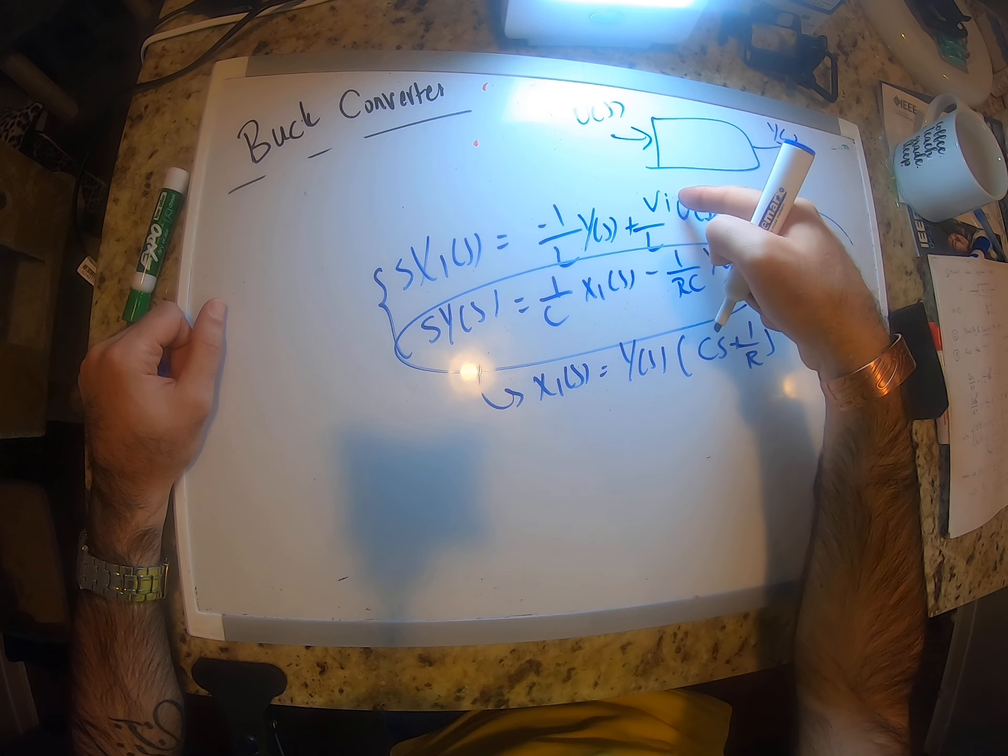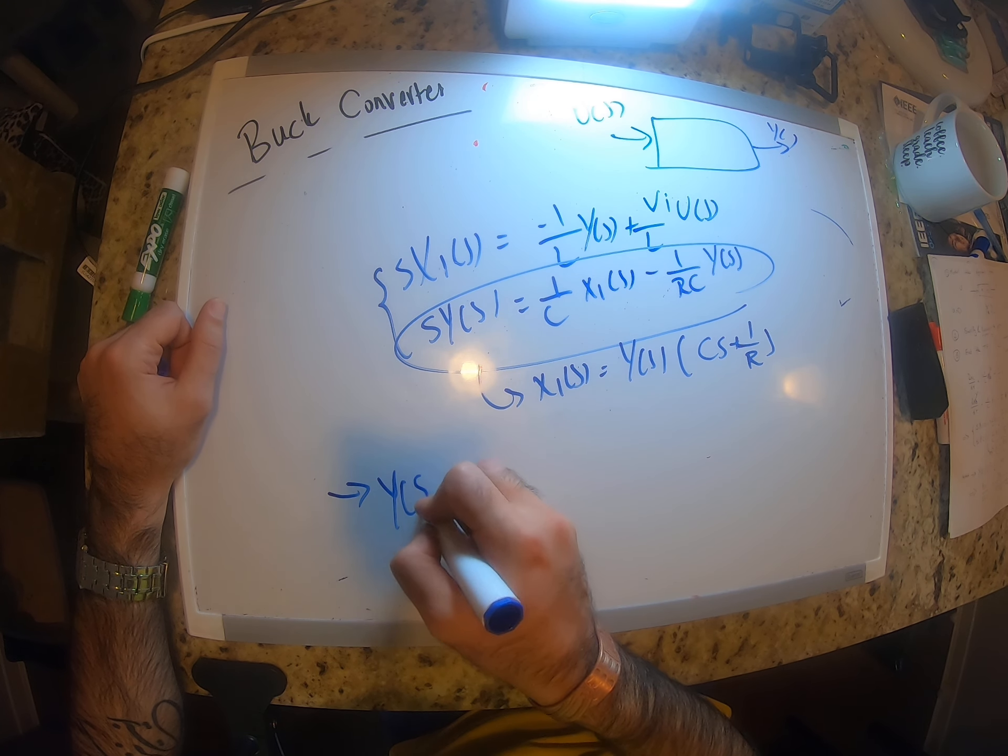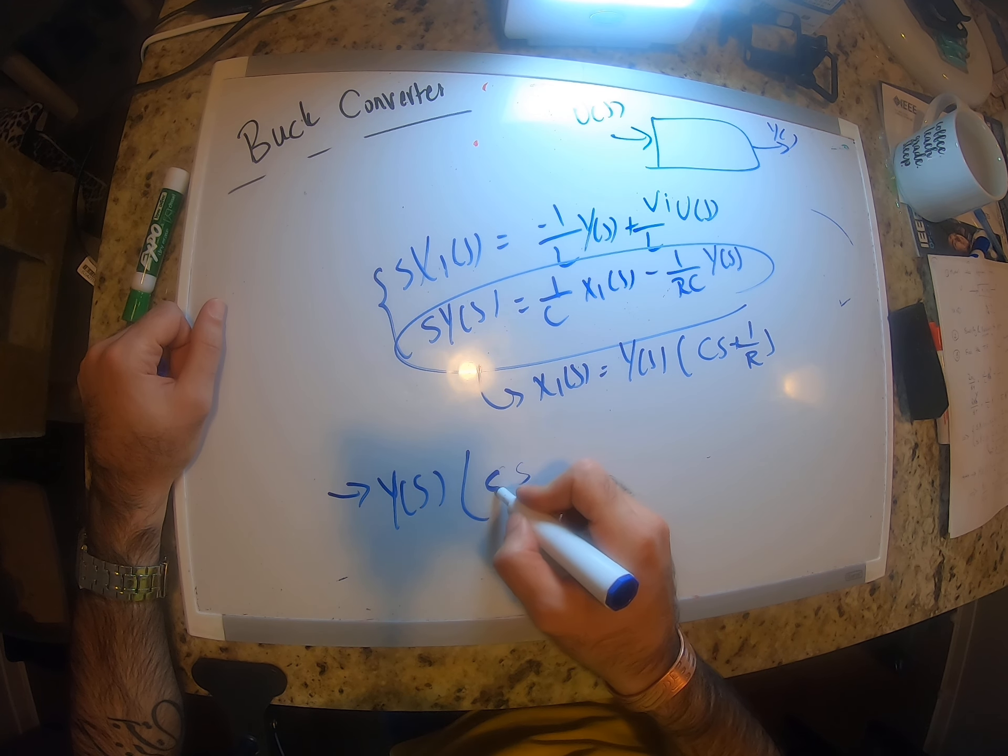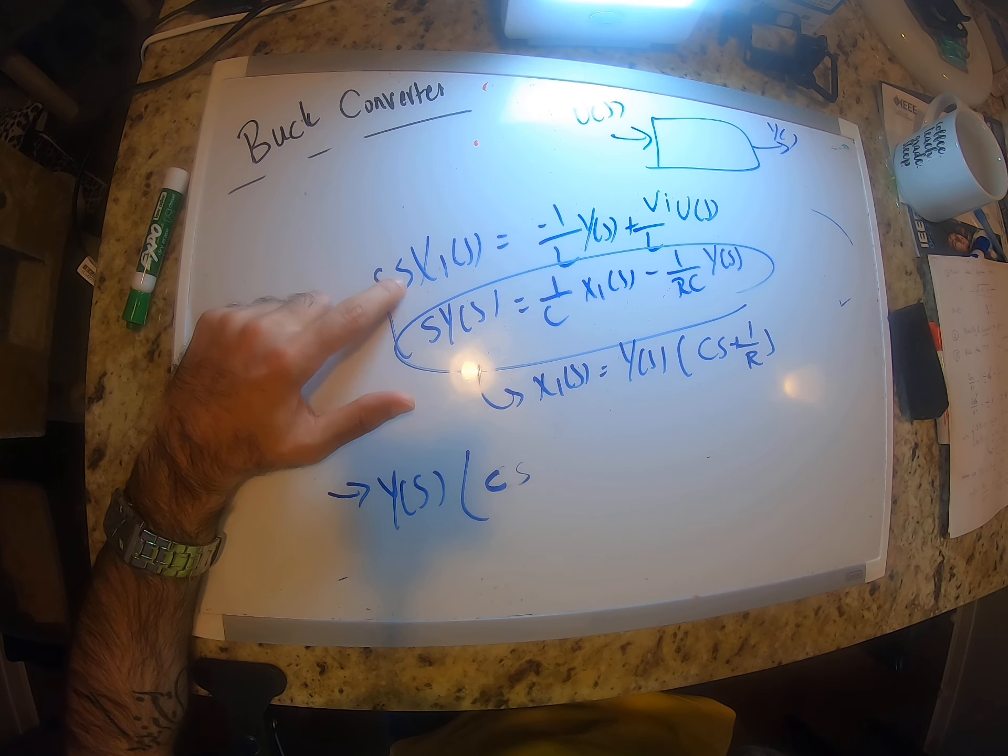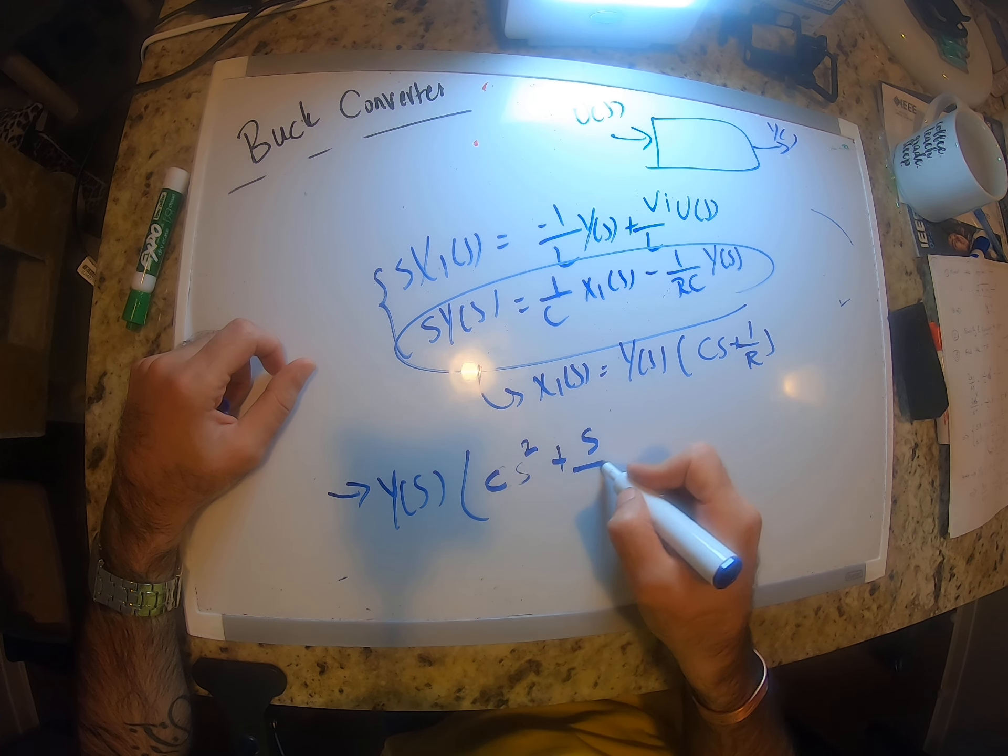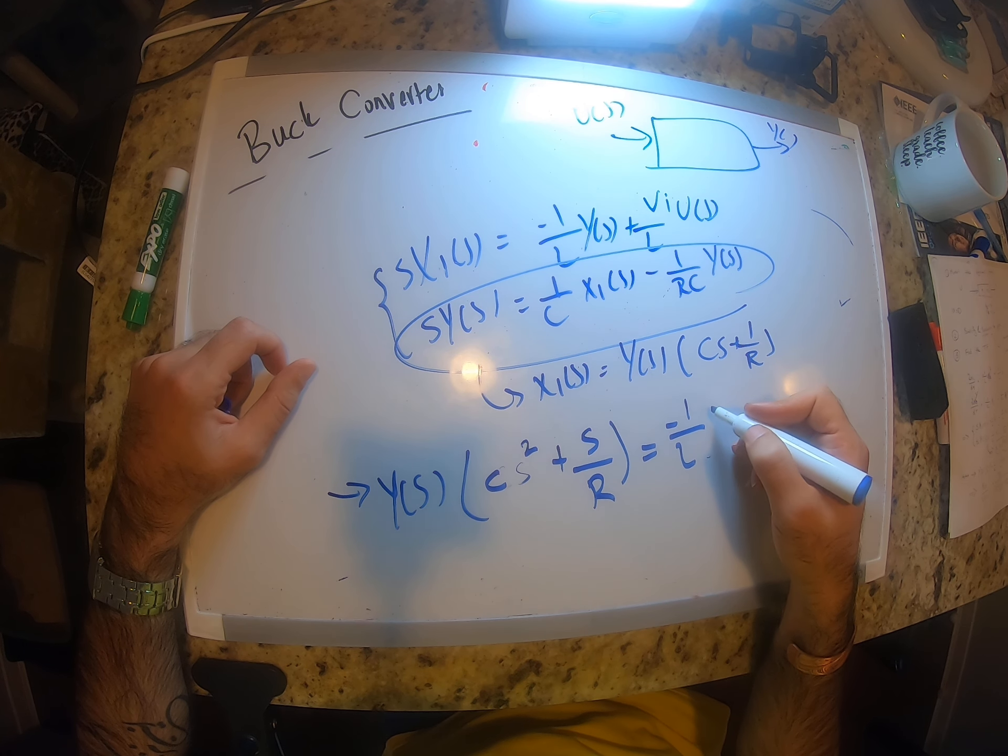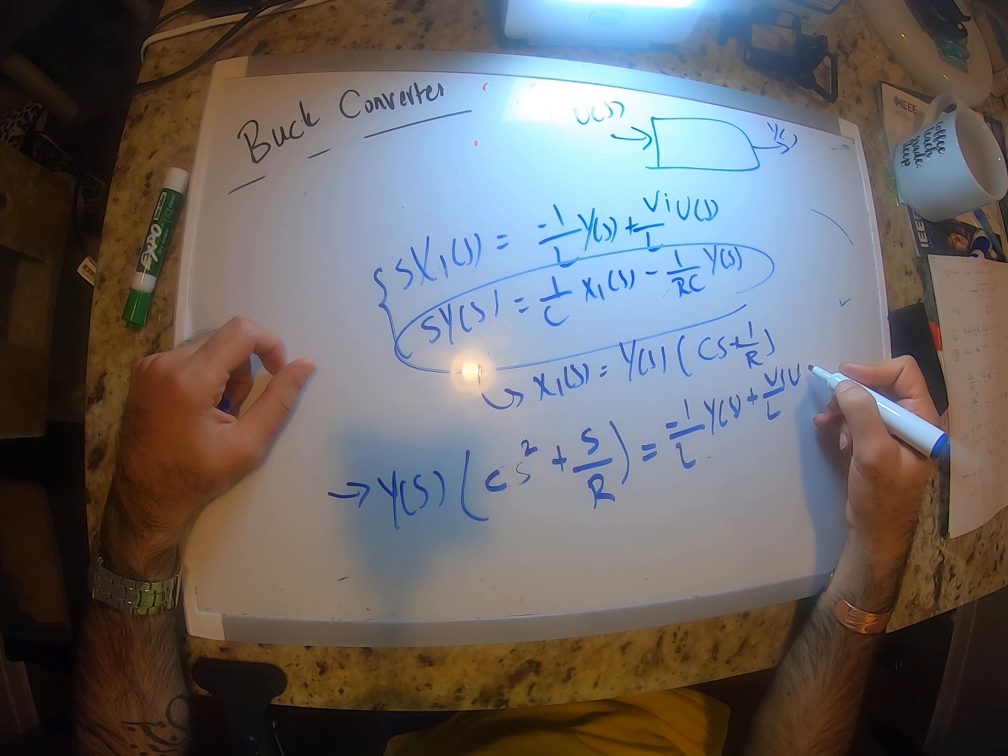We replace x1 into the first equation, so we found y(s) multiplied by Cs. Oh I forgot that x1—that's the problem. I forgot that s. I think Cs here, Cs squared plus s over R equals negative 1 over L y(s) plus Vi over L times u(s).